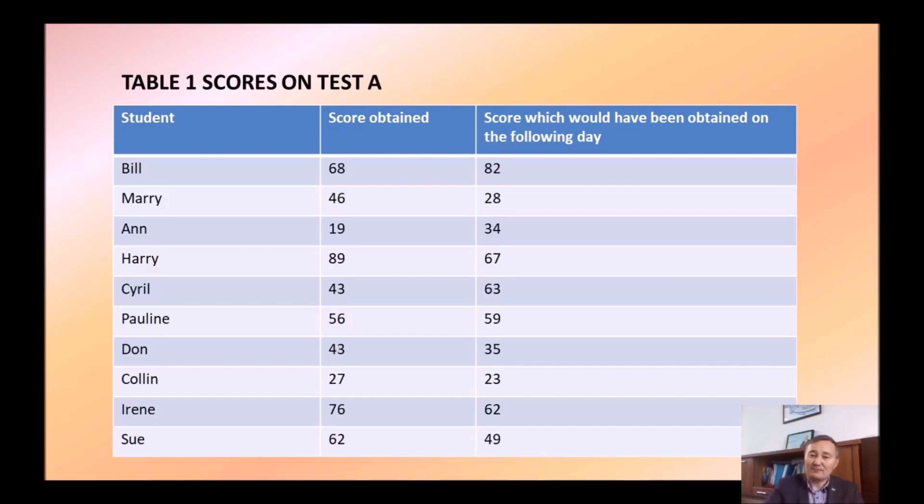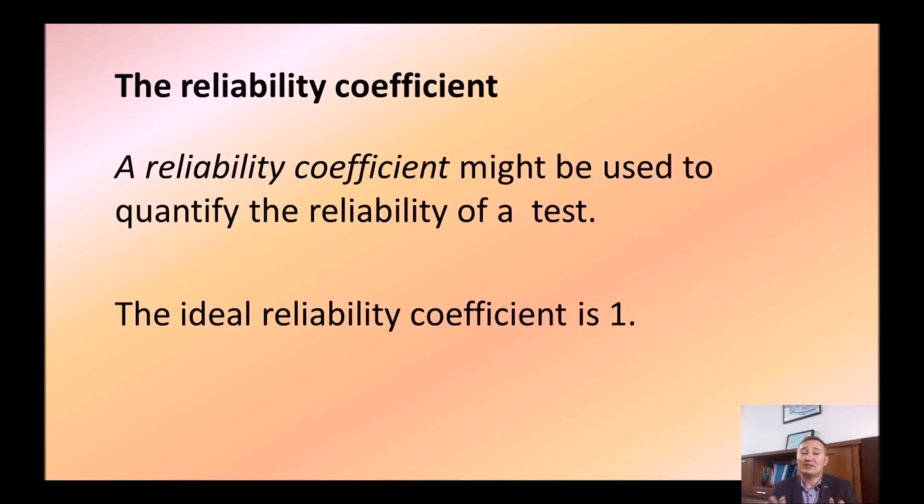While in test A, the difference is huge, 18 points, sometimes even 20, which means that test A is not reliable. Every test has a reliability coefficient and we can calculate how reliable a test is. The ideal reliability coefficient is 1. 1 here means 100%. Well, it's impossible to achieve 1, but because anyways, there will be a difference between day 1 and day 2. However, we can obtain quite high reliability coefficient anyways, if we have detailed rubrics and several scores, if it is a productive test.